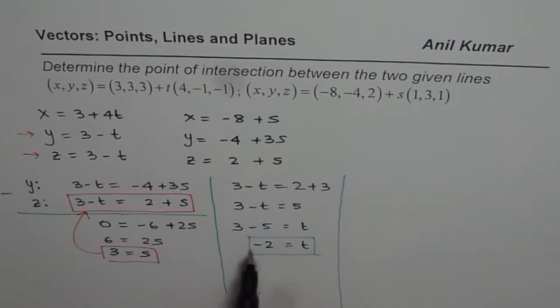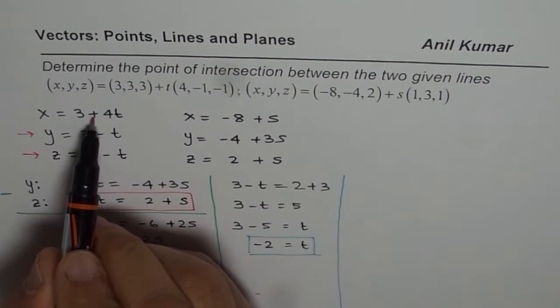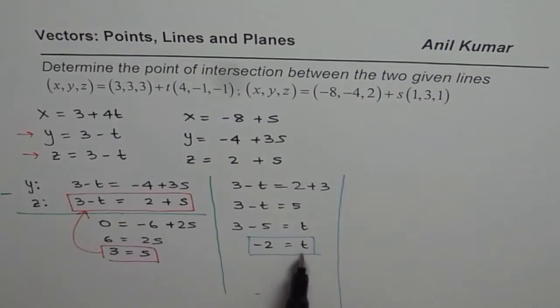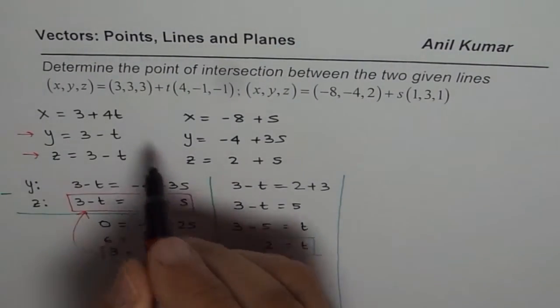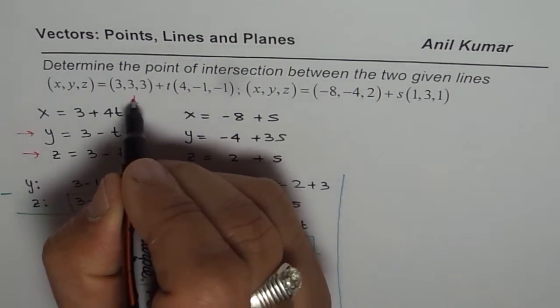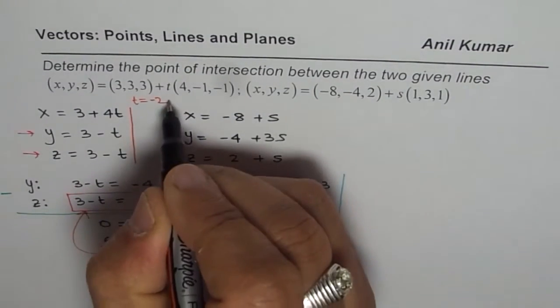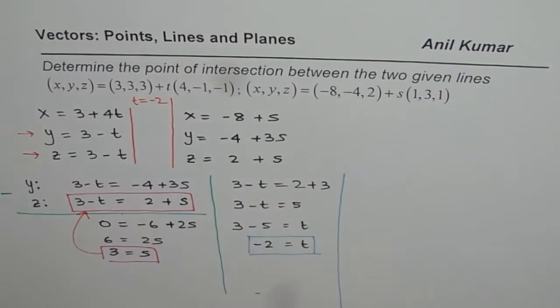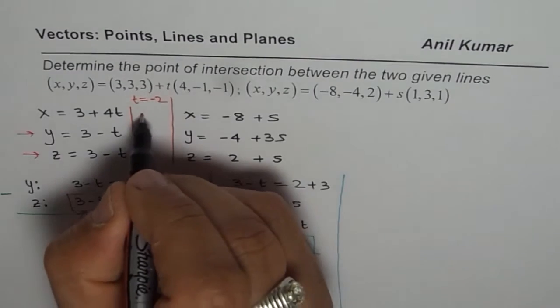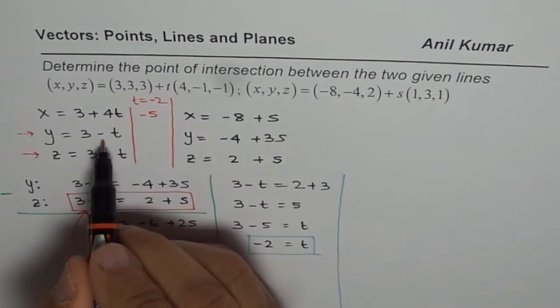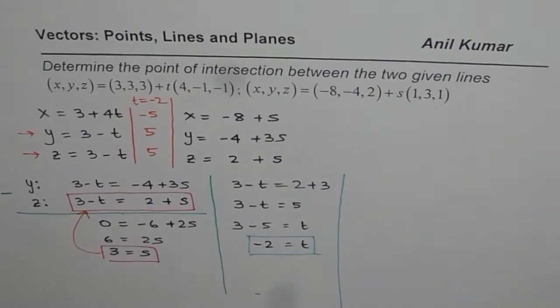So let us substitute t as minus 2 here and calculate. So what we have here is 3 plus 4 times minus 2. 4 times minus 2 is minus 8. So 3 minus 8 is minus 5. So we are substituting t equals to minus 2 and then calculating. Minus 2 means minus 8, 3 minus 8 is minus 5. Minus 2 makes it plus 2, so we get 5. Minus 2 makes it plus 2, we get 5. So we check these values there.